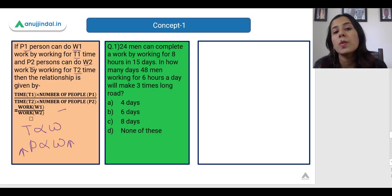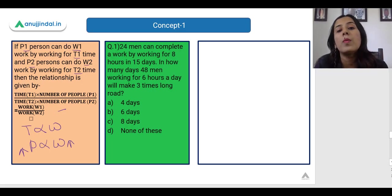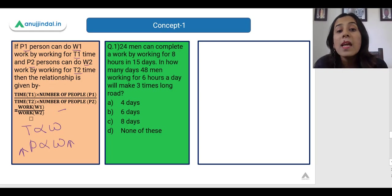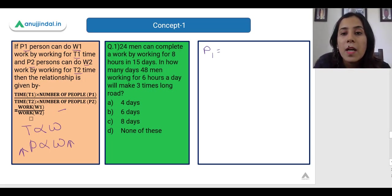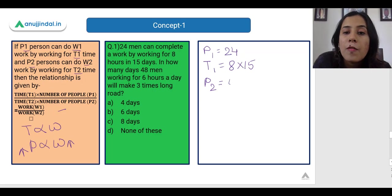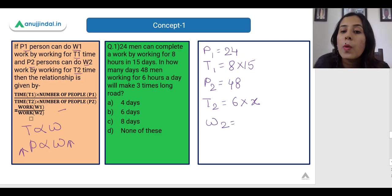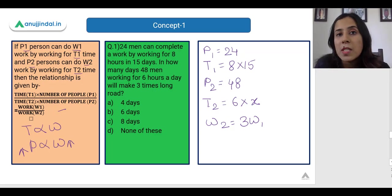Now let's see a question for more clarity. We have 25 people who can work 8 hours a day for 15 days to complete a work. 48 men working 6 hours a day will make a road 3 times longer. So in the first case, P1 = 24, T1 = 8 × 15, and in the second case P2 = 48, T2 = 6 × x days. The road in the second case is 3 times longer, so W2 = 3 × W1.